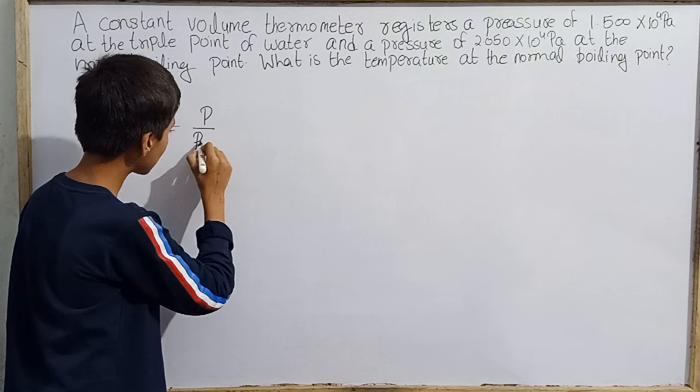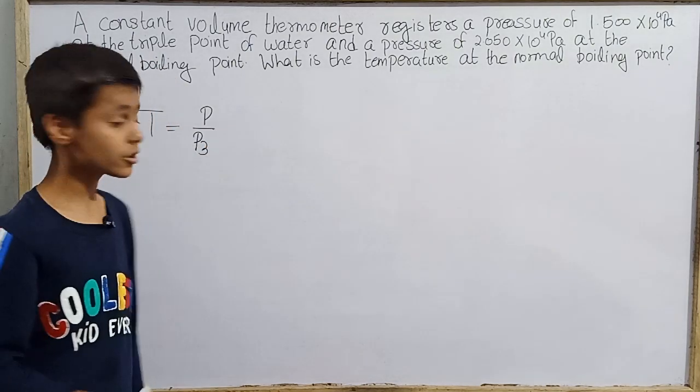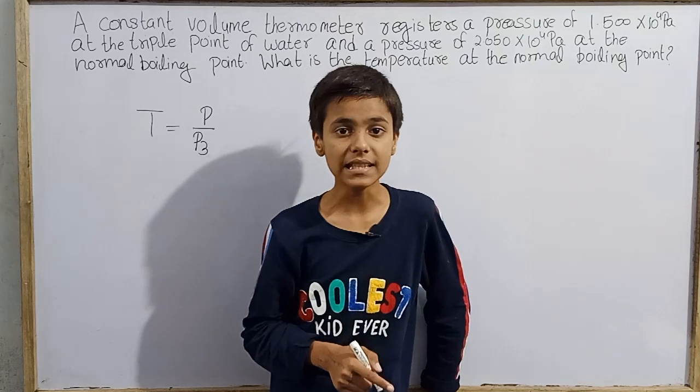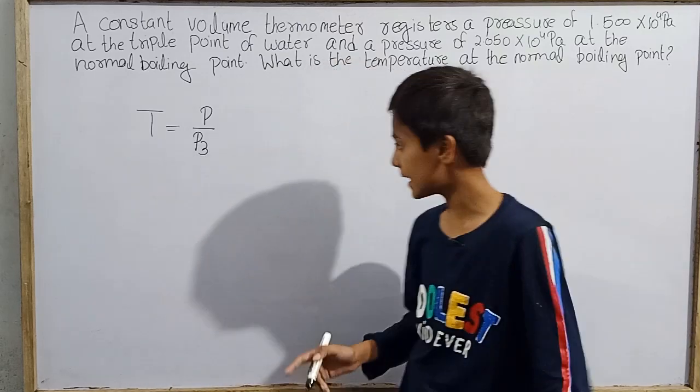Temperature at any kind of point where we have pressure given is pressure at that temperature divided by pressure at triple point of water. I will denote this from 3 to something like, if you will see this equation in Resnick Halliday.